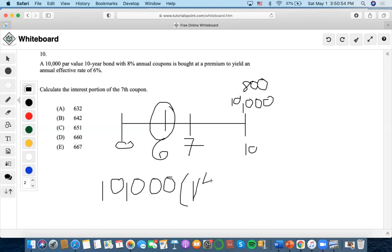V to the 4 because there are 4 years, 1, 2, 3, 4, to time 6 and you discount it back to 6 and then we're going to add the coupon value of 800 also discounted back to 4 years at 6%.